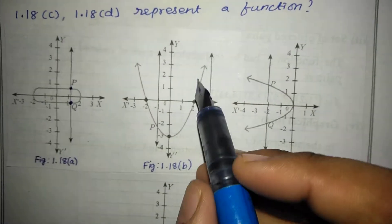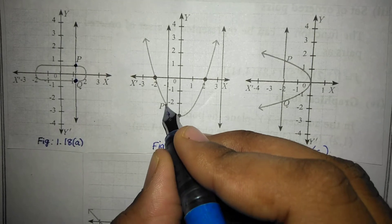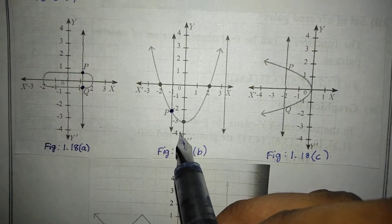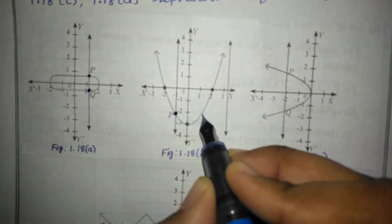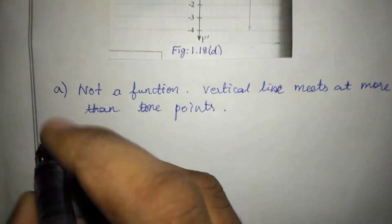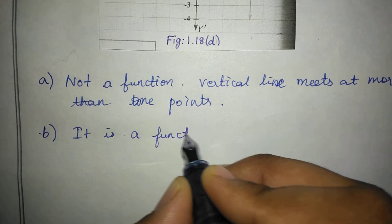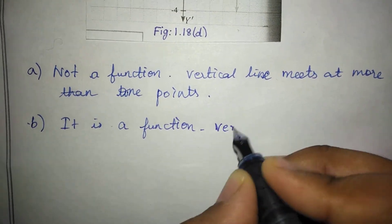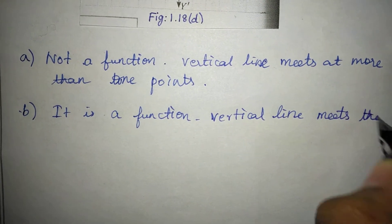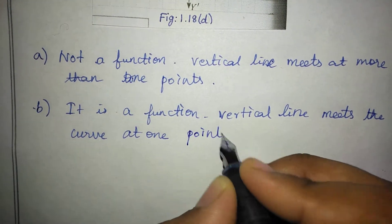And next, B. For B, if we draw a vertical line, it is a function. The vertical line meets the curve at one point — whatever point, it meets the curve at one point. So it is a function.